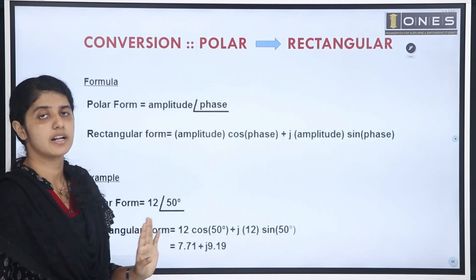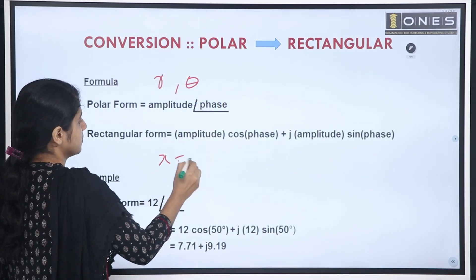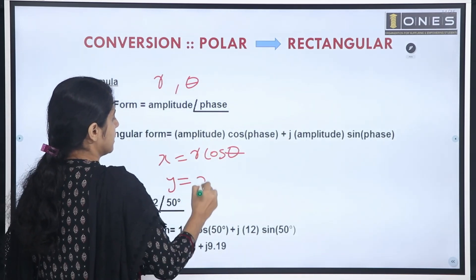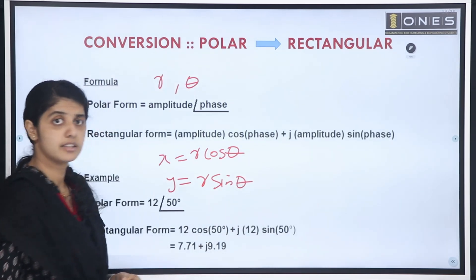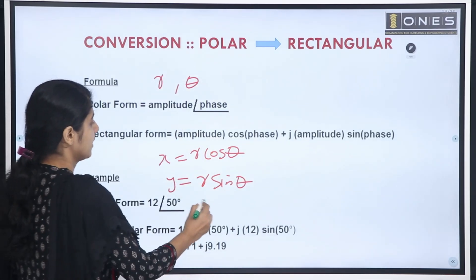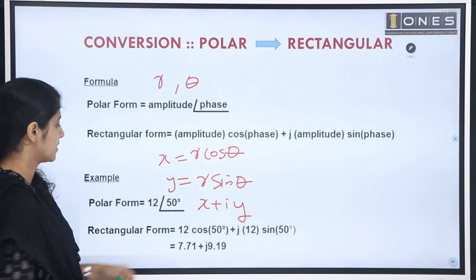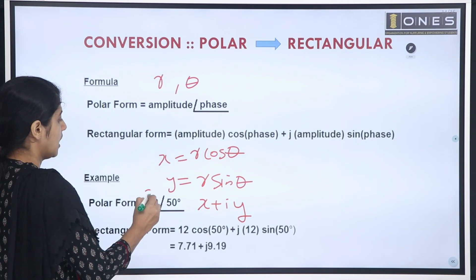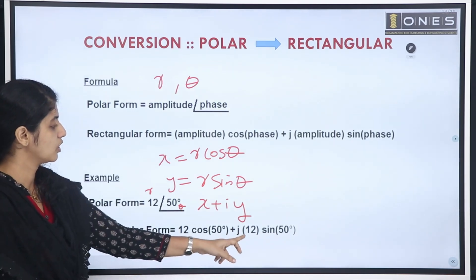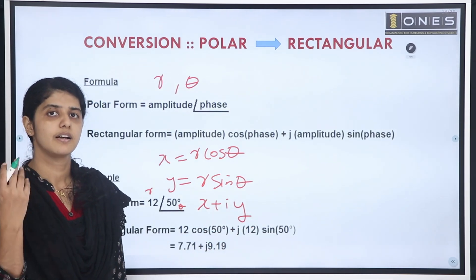For polar to rectangular conversion, we use x equals r cos theta and y equals r sin theta, then substitute into x plus iy. For example, 12 angle 50: x equals 12 cos 50, and y equals 12 sin 50. Substituting gives us x plus iy in rectangular form.